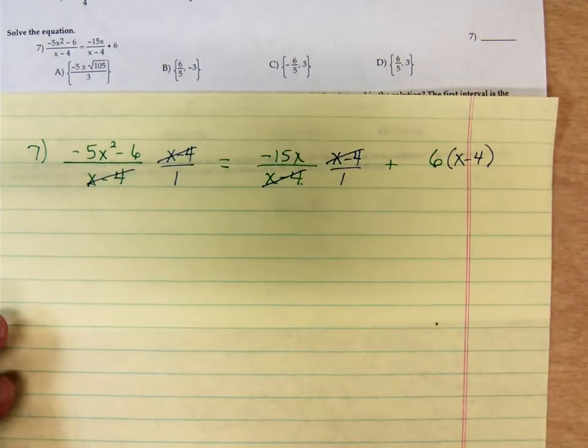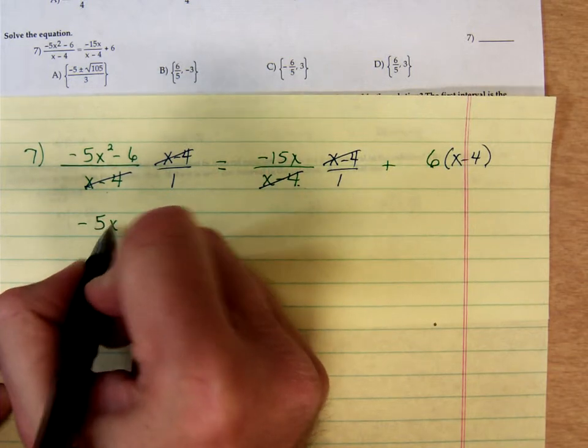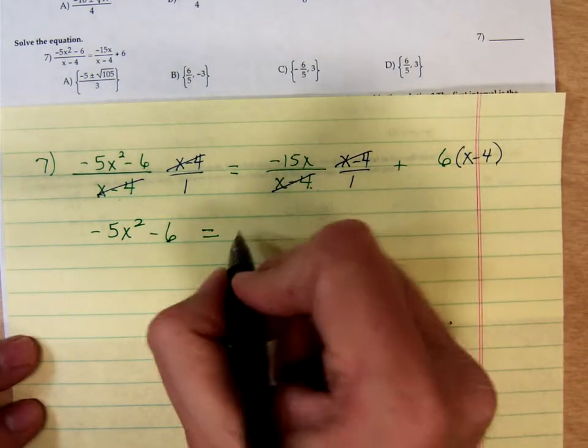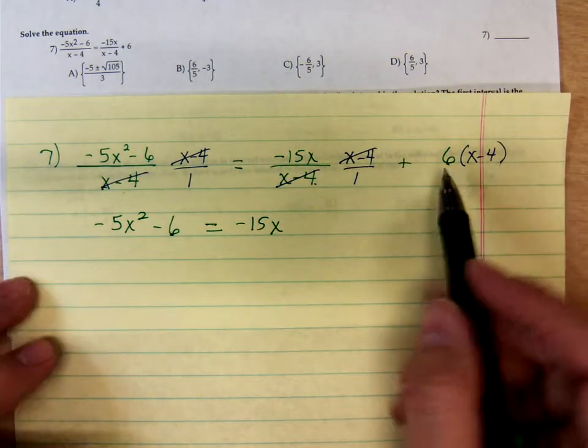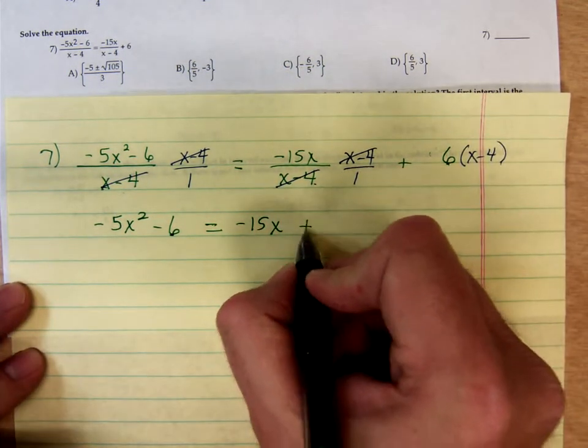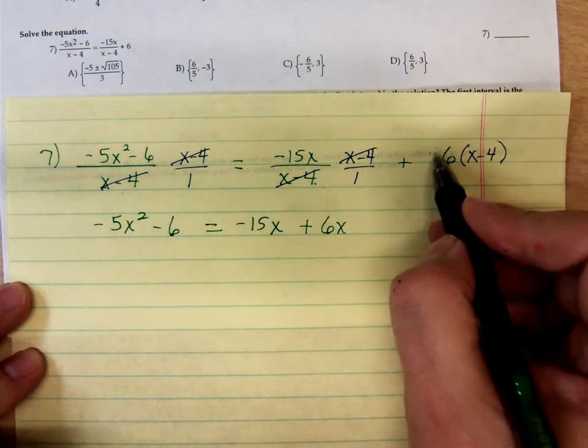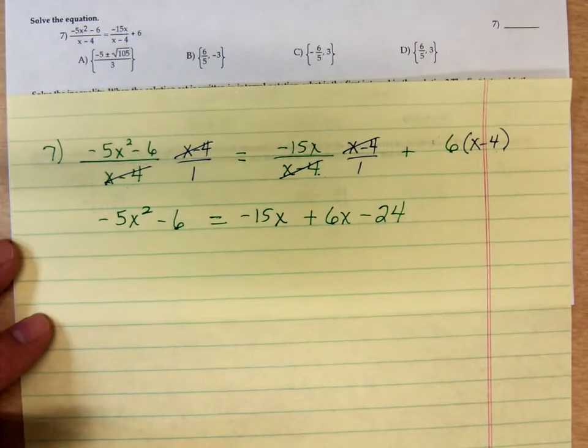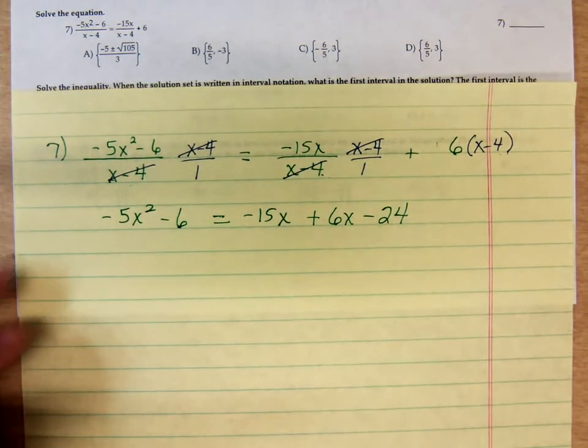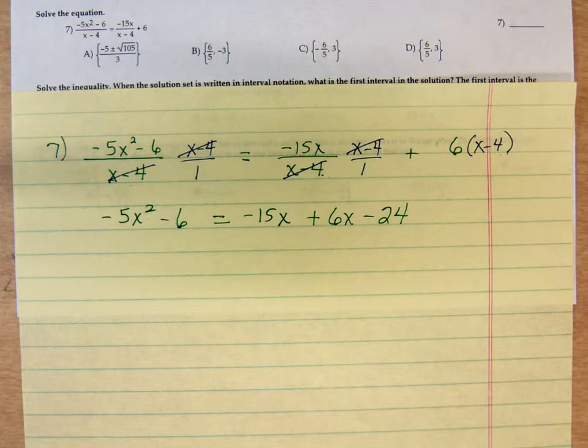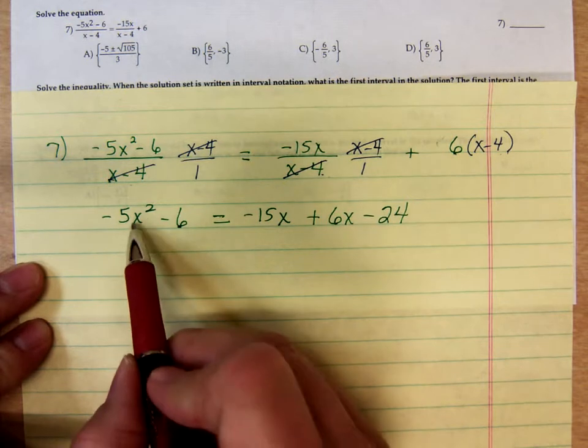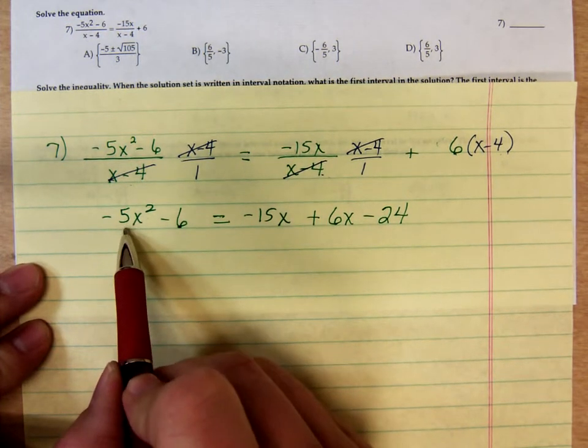So what do we have here? We have negative 5x squared minus 6. There's the green equals negative 15x. Distributing that 6, we'd have plus 6x and minus 24. Now, this is a quadratic equation because there's the x squared. So whether you want to factor it or use the quadratic formula, you still need to write it in that standard form. Ax squared plus bx plus c equals 0. I always like the x squared coefficient to be positive.